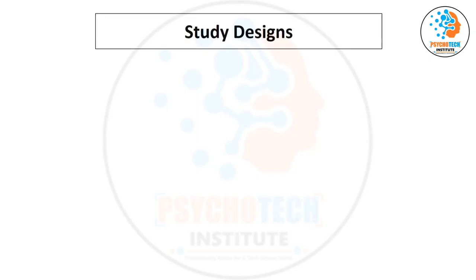Study design is the most important thing for research methodology, and there may be two questions possible on this topic. But this is a very important topic for biostatistics. Under study design, we are able to understand whether we are going to conduct a clinical trial or an observational study. We will discuss this in a very simple, layman way so that it's easy to remember.